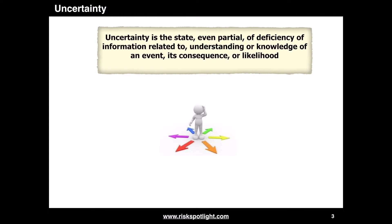ISO 31000 defines uncertainty as a state, even partial, of deficiency of information related to understanding or knowledge of an event, its consequence or likelihood. There are lots of important concepts covered by this definition, so let's try to understand these various concepts with examples.